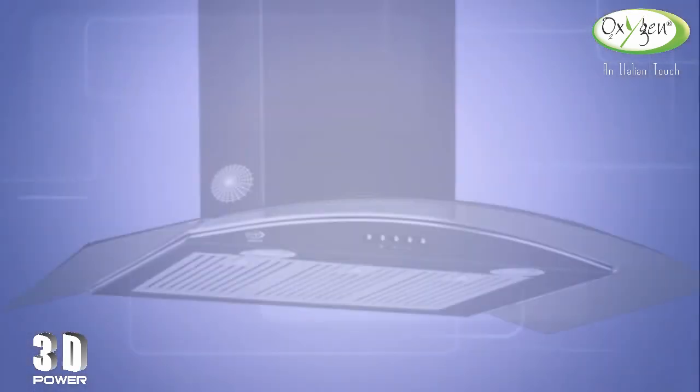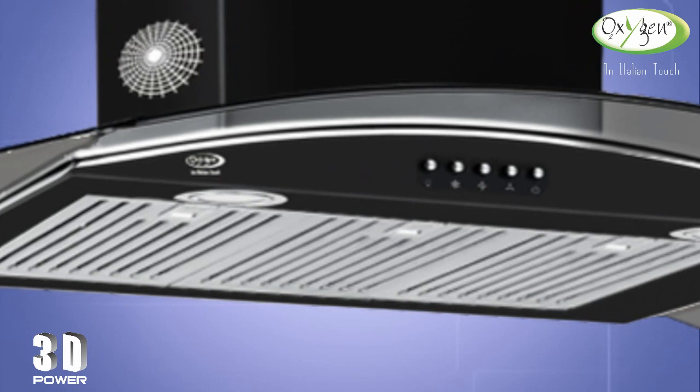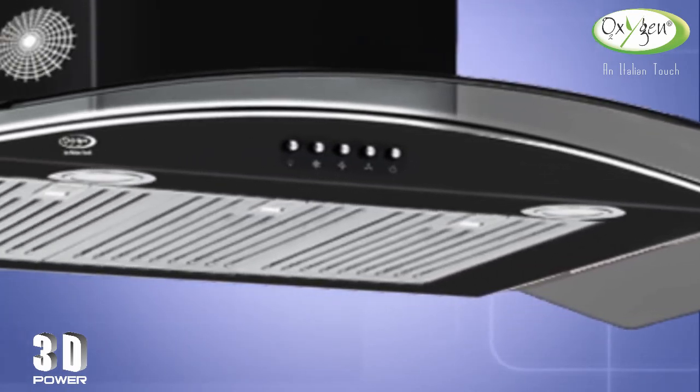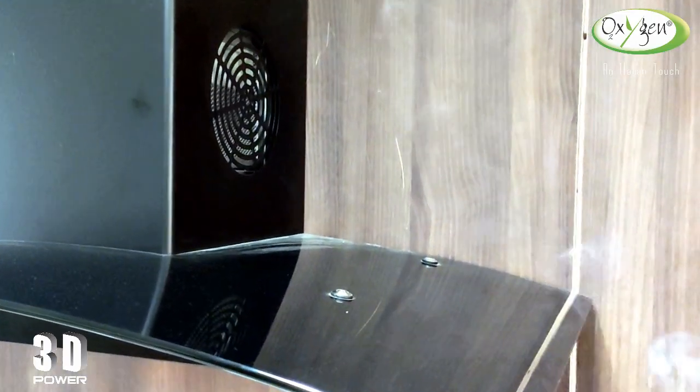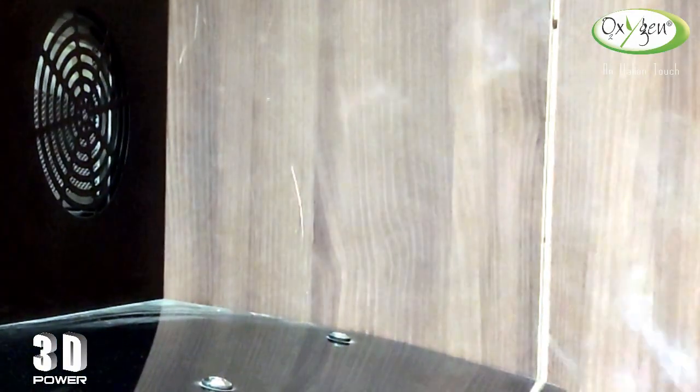Most chimney suction comes from the filters mounted at the bottom of the chimney. This 3D chimney's 3D technology provides a three-way suction through its unique filter arrangement at the bottom and at both sides of the chimney.